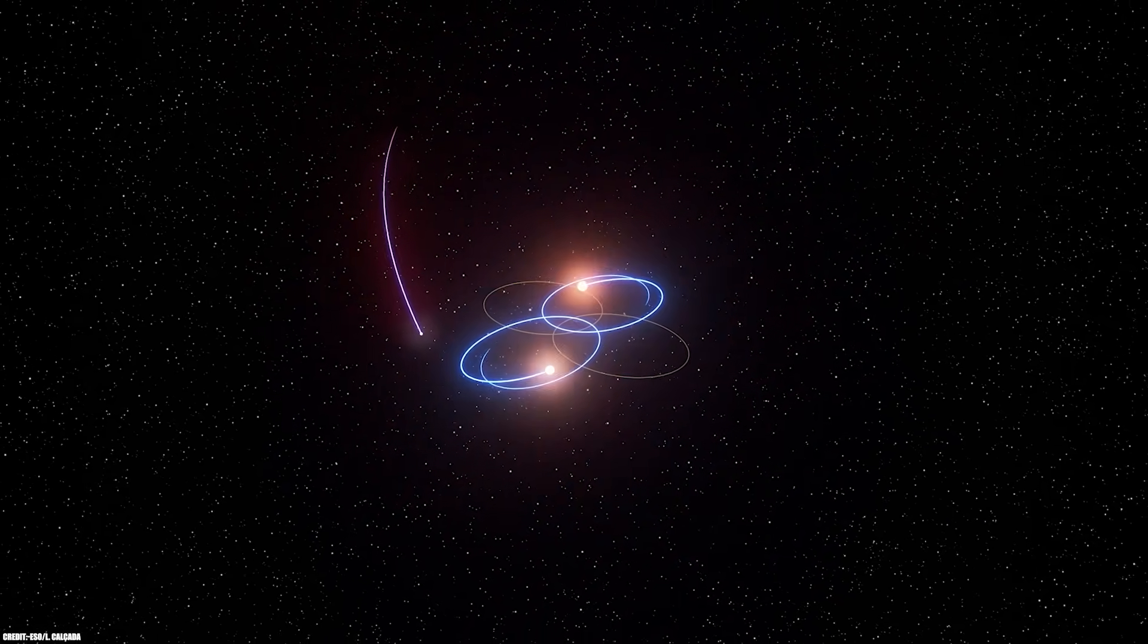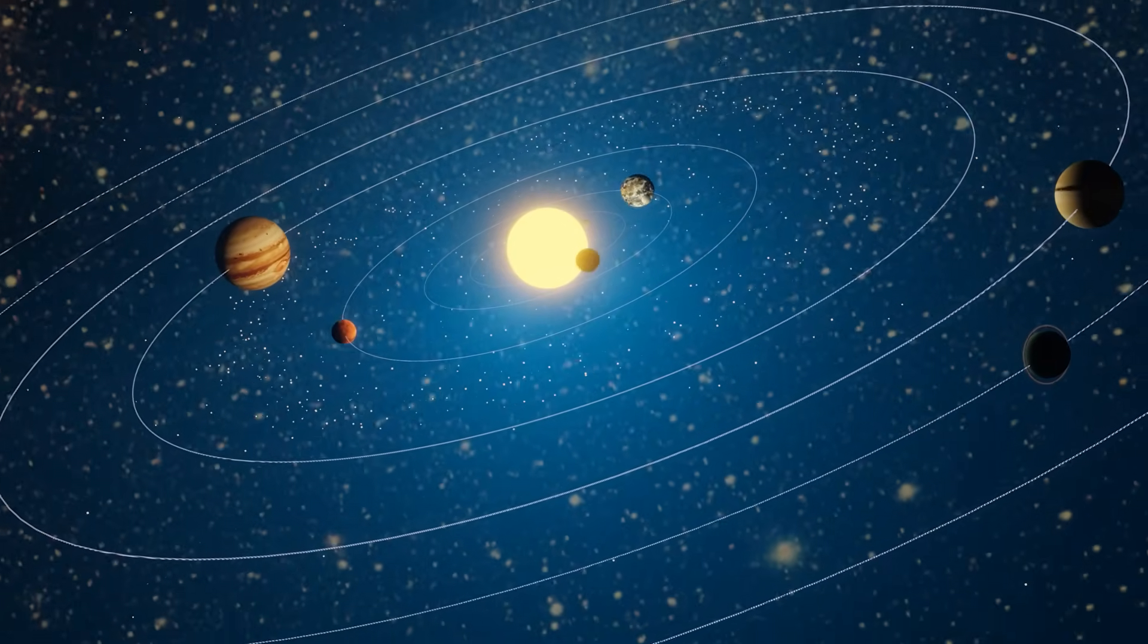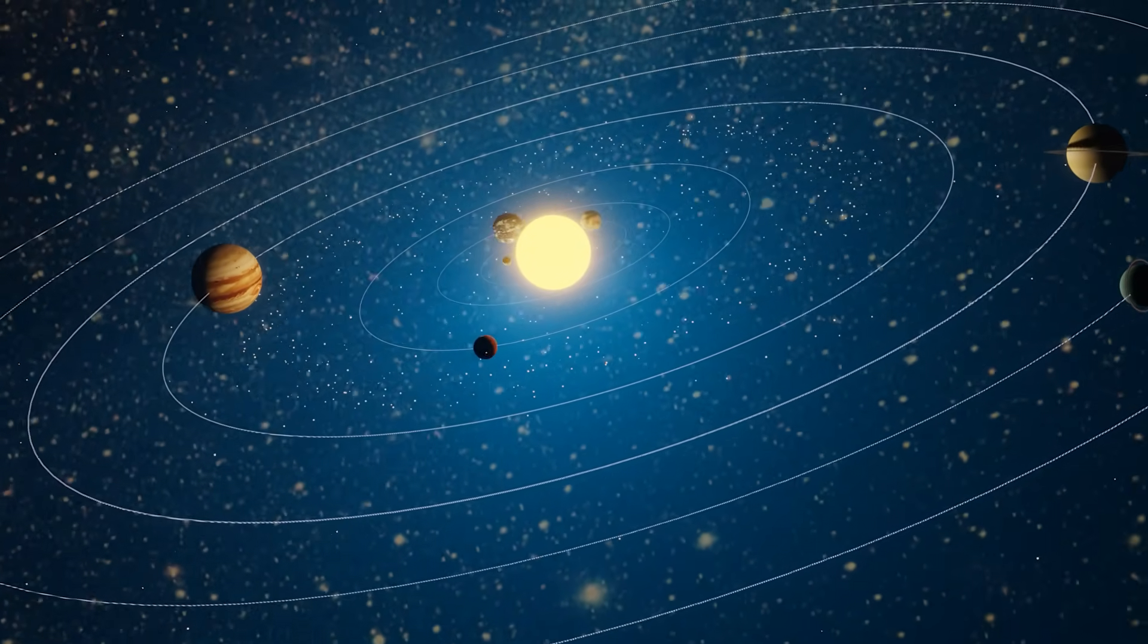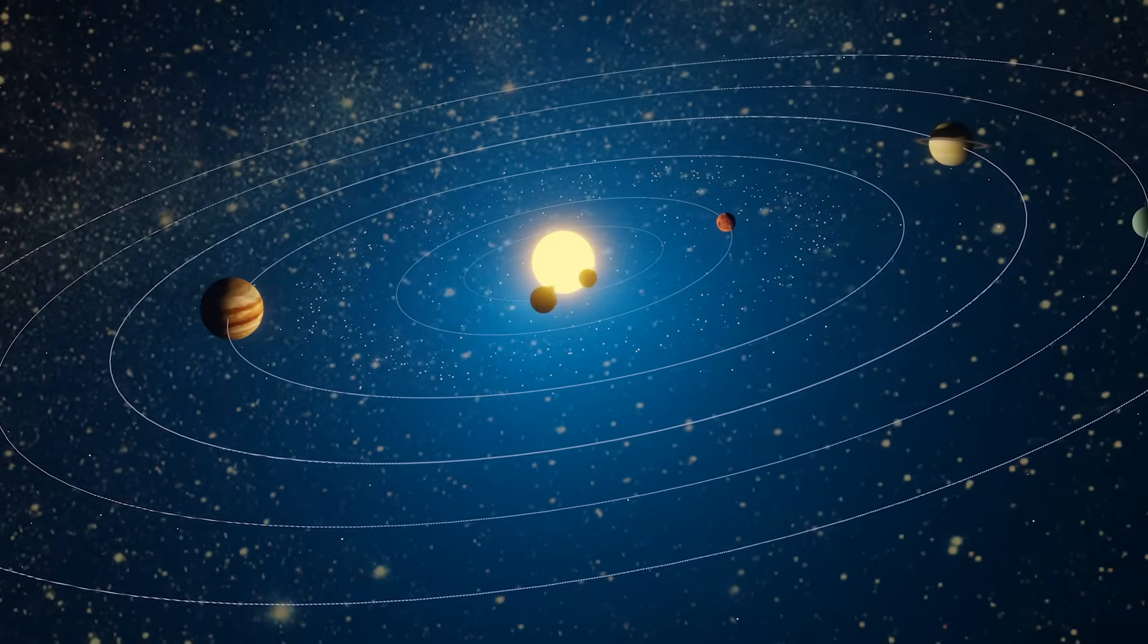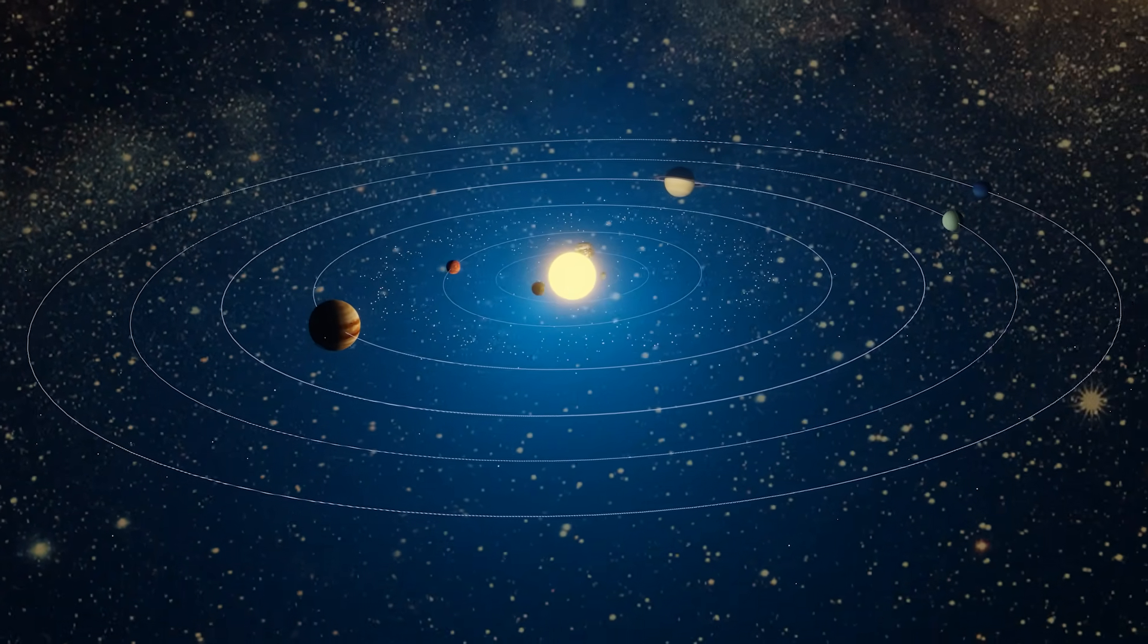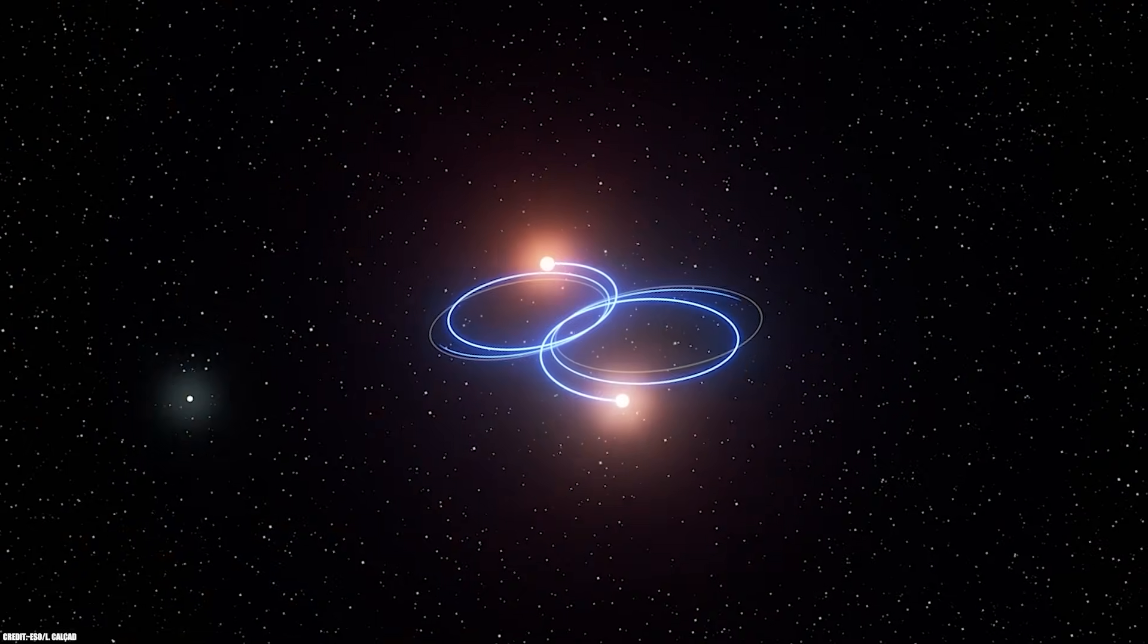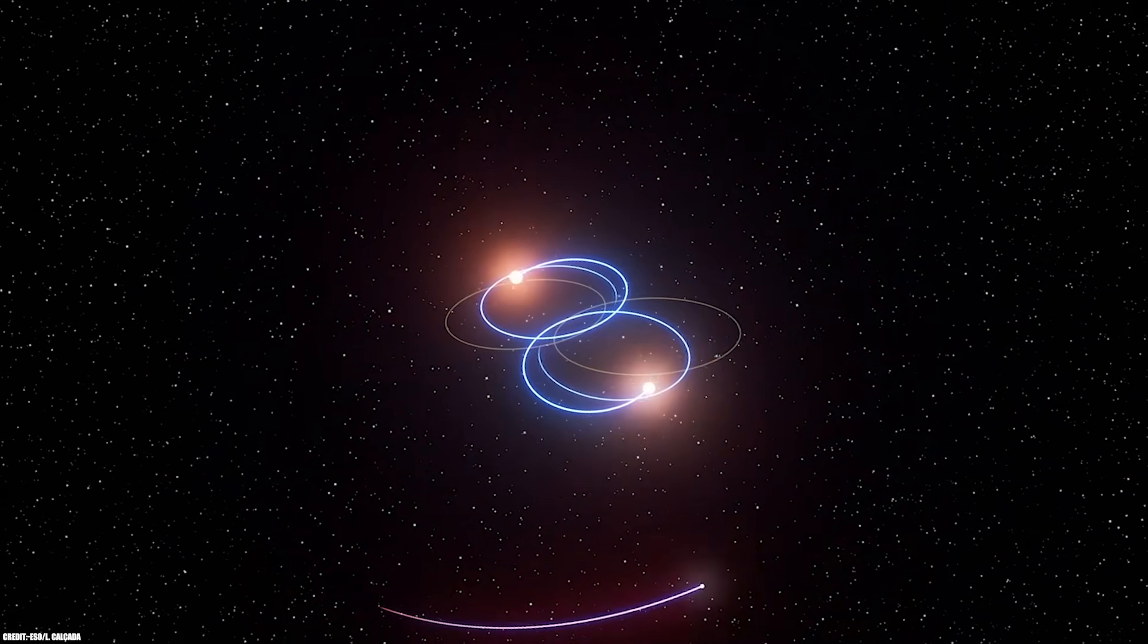This perpendicular orbit should be gravitationally unstable. Conventional planetary formation theory tells us that planets form from the same spinning disk of gas and dust that creates their stars, which is why solar systems tend to be flat, with everything orbiting in the same plane. So how did 2M1510ABb end up in this bizarre configuration?